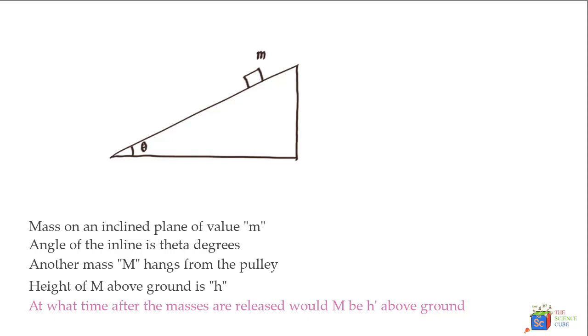Then further the problem says that there is another mass capital M at the other side that is actually there's a pulley. So we'll go ahead and make a pulley too. And the other side there's another mass capital M which is strung up with this mass. So let's go ahead and make a string over here. And say the value of this mass is capital M.